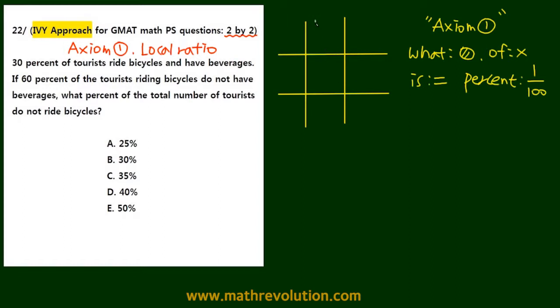Now in the first column, we're going to put bicycle, people who ride bicycles. Next column, people who don't ride any bicycle. On the first row, we're going to put beverages. Second row, we're going to put people who don't have any beverages.